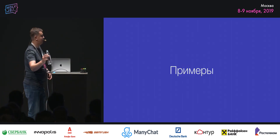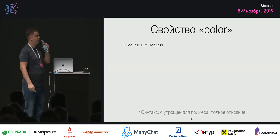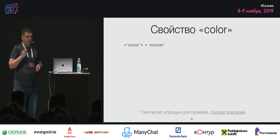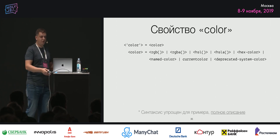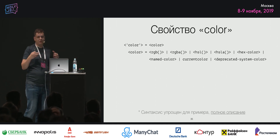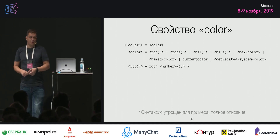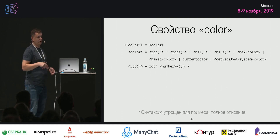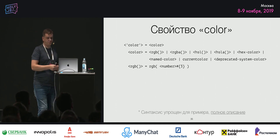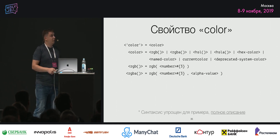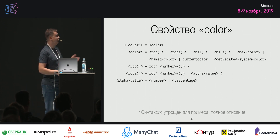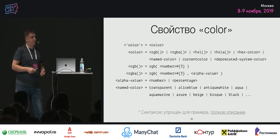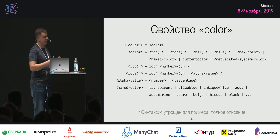Несколько примеров для закрепления. Свойство color определяется просто: это тип color. Что представляет собой color? Функция rgb, rgba, хексовое значение, ключевые слова для цветов. Функция rgb состоит из функционального токена rgb, потом ровно три числа, разделённых запятой — решётка в фигурных скобках 3 — и потом закрывающая скобочка. rgba — то же самое, только добавляется запятая и alpha value: либо число, либо процент. Named color — это набор ключевых слов: зелёный, красный, синий и так далее.